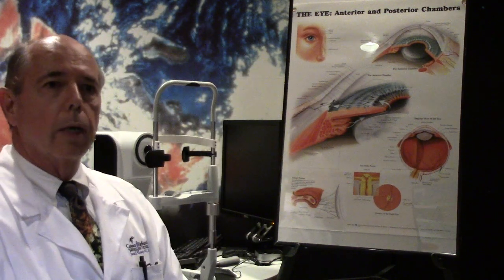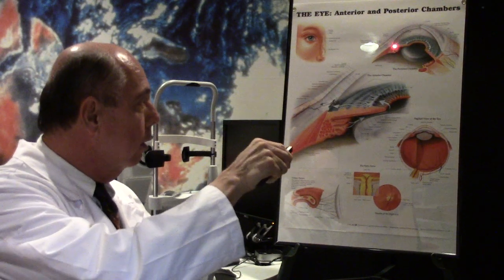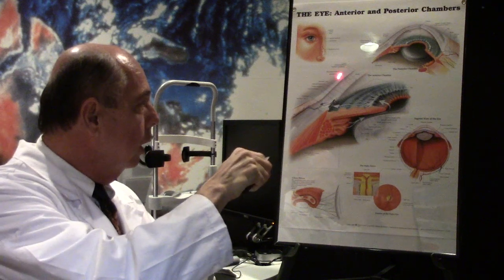So what is herpes keratitis from herpes simplex? Like I said, it's the same virus that causes cold sores. What happens is, classically, you get a lesion on your cornea, that's the clear part of your eye, and you get a lesion on the surface of your cornea.